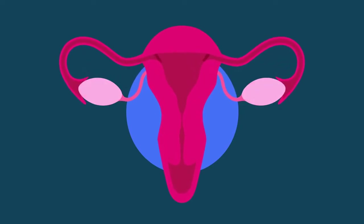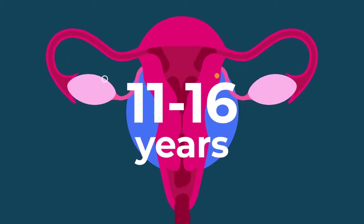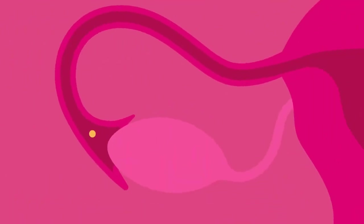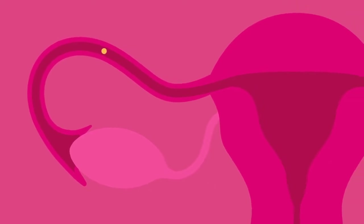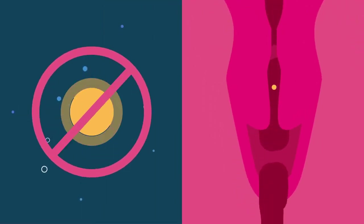Periods start any time between the ages of 11 to 16 years. Each month, as part of the menstrual cycle, an egg is released from the ovaries. If the egg is not fertilised, then it's lost as part of your period.